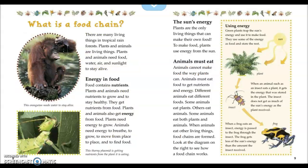What is a food chain? There are many living things in tropical rainforests. Plants and animals are living things. Plants and animals need food, water, air, and sunlight to stay alive.